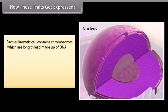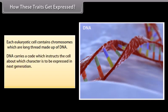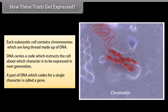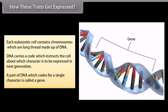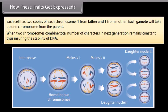How these traits get expressed. Each eukaryotic cell contains chromosomes which are long thread made up of DNA. DNA carries a code which instructs the cell about which character is to be expressed in the next generation. A part of DNA which codes for a single character is called a gene. Each cell has two copies of each chromosome, one from father and one from mother. Each gamete will take up one chromosome from the parent. When two chromosomes combine, total number of characters in next generation remains constant. Thus, ensuring the stability of DNA.